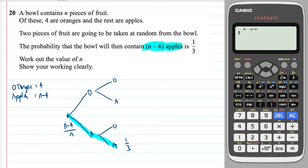And then in the second pick, we've lost one apple because we've taken one already. So it's n minus five apples over a total of n minus one, because again, one of the fruit has been taken out. So the total is dropped by one.